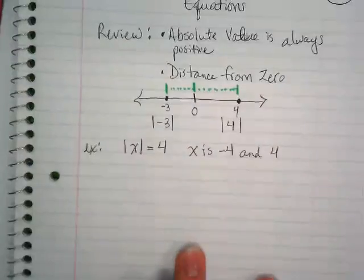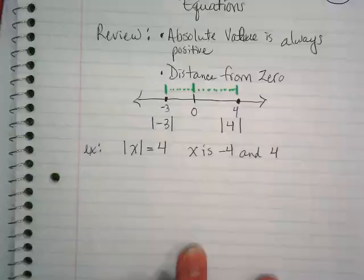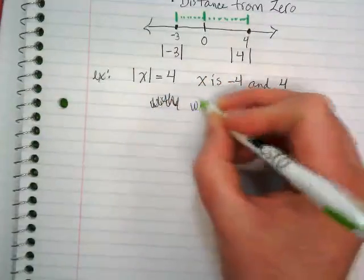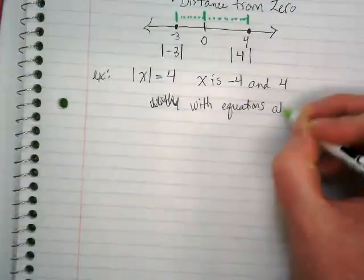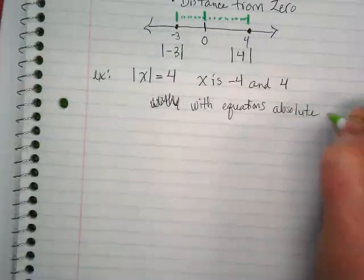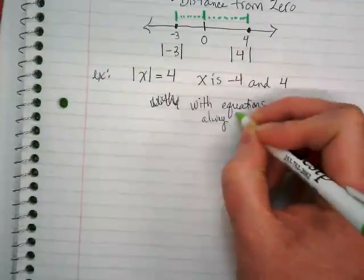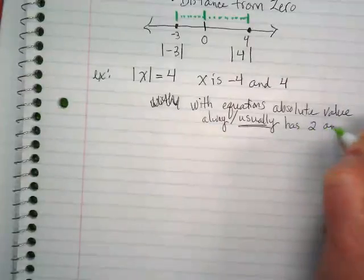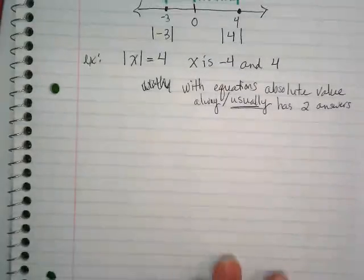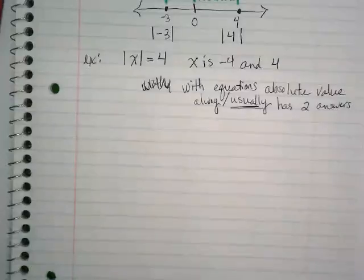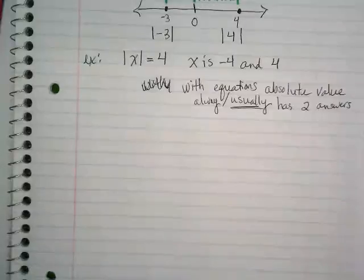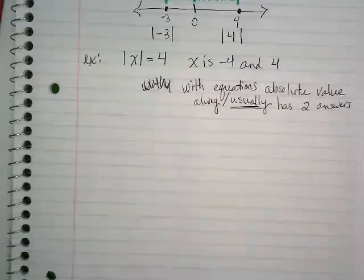So, what you guys came into algebra knowing is that absolute value is always positive because it's measuring distance from zero. When we're solving equations, here's the new rule. With equations, oops, I'm starting to write the e with the with. With equations, absolute value, always, I should say usually. I always get nervous saying always. Because there's always something that tells me I'm wrong. Really, usually, has two answers. For that same reason, because we're looking at that distance from zero. If I told you guys that the absolute value of x was seven, the two possibilities would be negative seven and seven, right? They're both the same distance from zero.